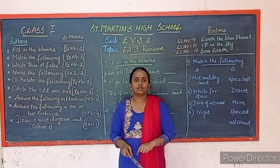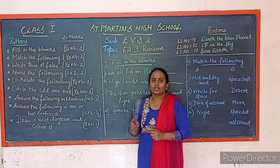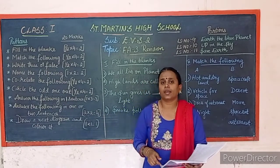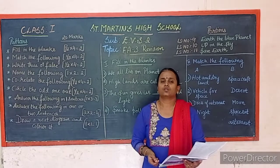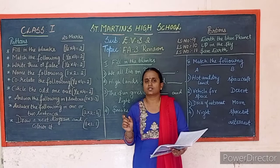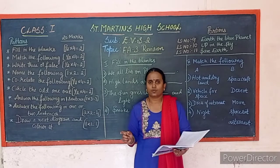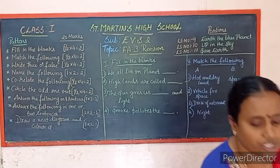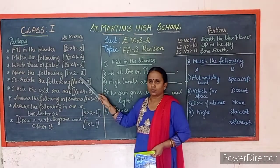Name the following: you will have 2 questions where you give a one-word answer. For example, 'the layer of air around the earth' — the answer is atmosphere. Each question carries 1 mark, so the total mark would be 2 marks.